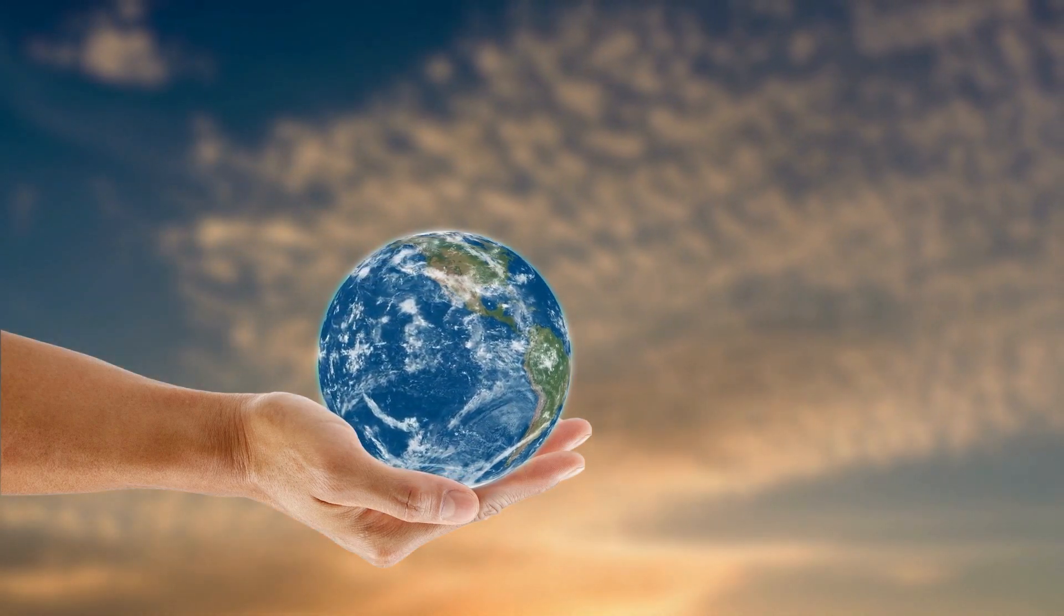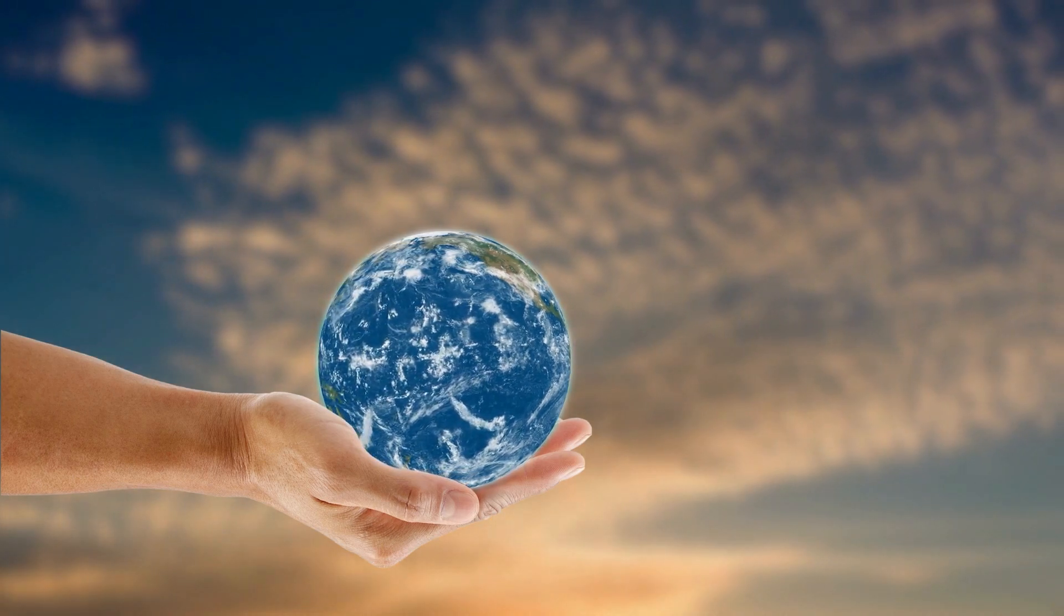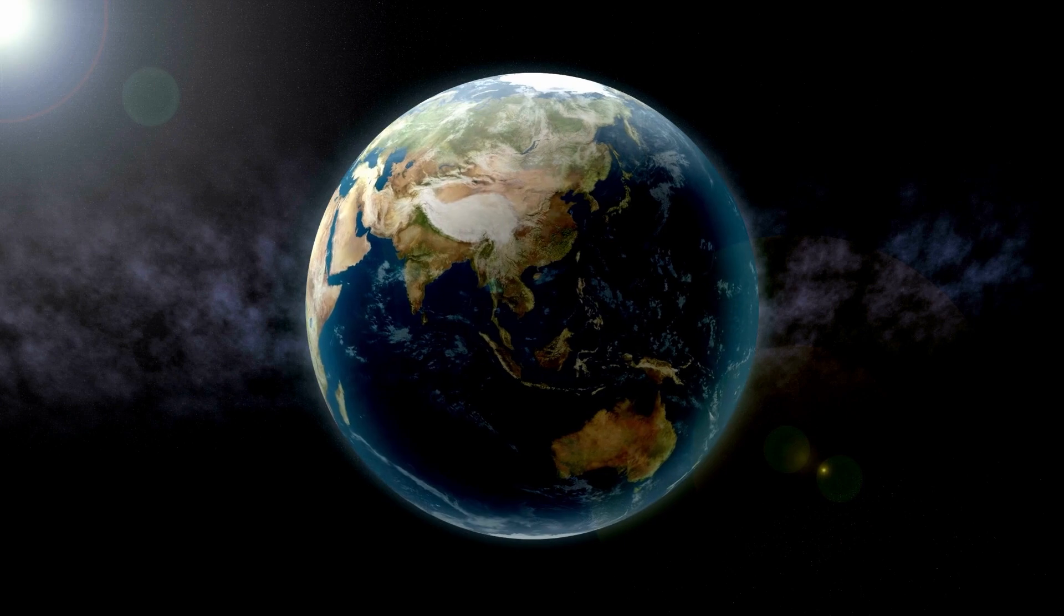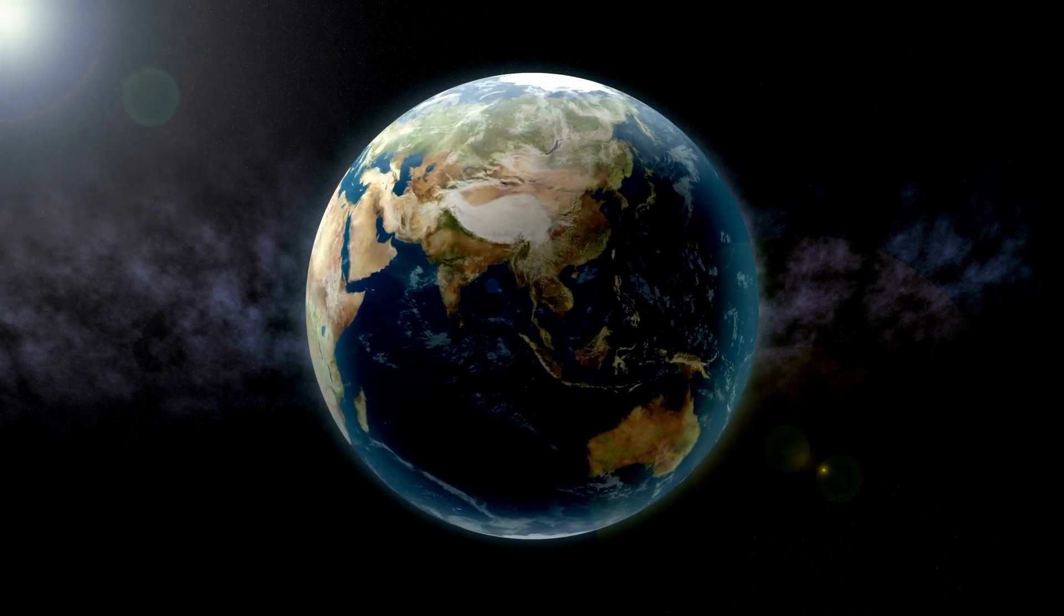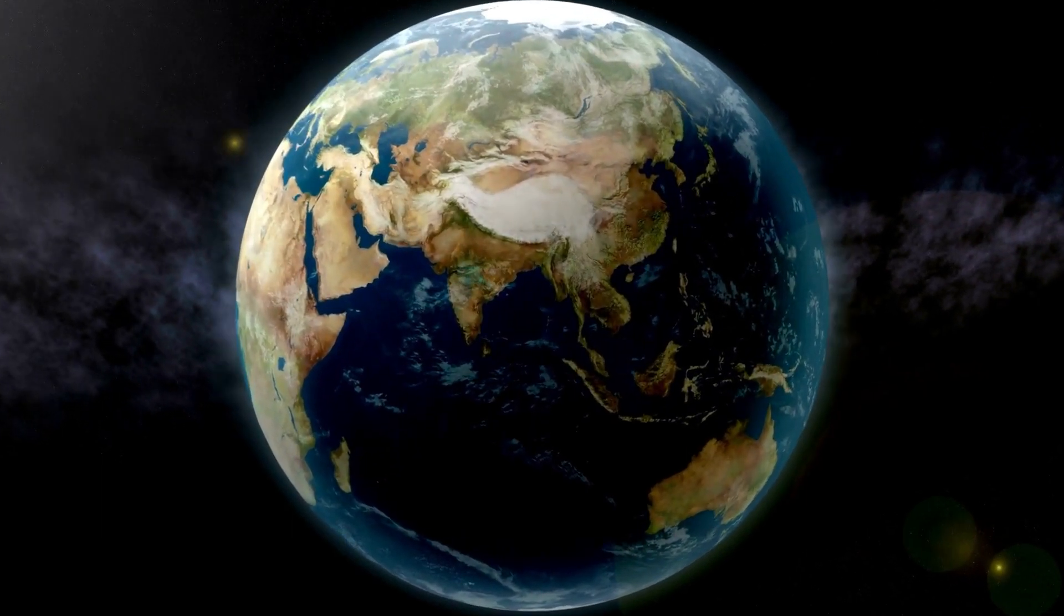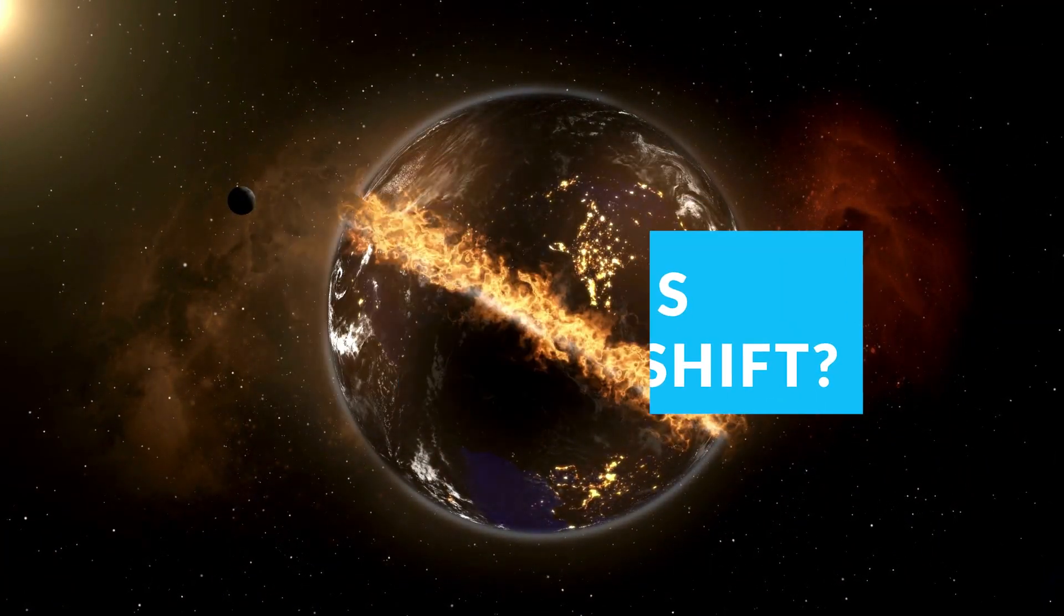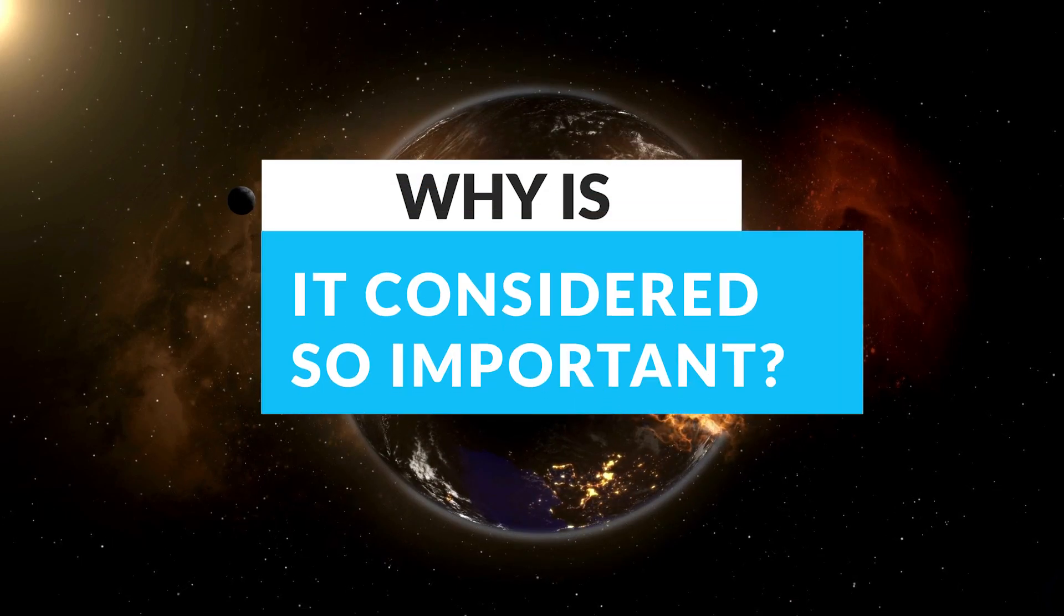The great oxidation event is a pivotal moment in the history of our planet that occurred around 2.4 billion years ago. This event marked a turning point in the evolution of our planet, shaping the course of life on Earth as we know it today. But what exactly caused this dramatic shift and why is it considered so important?